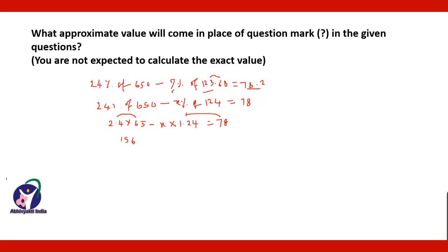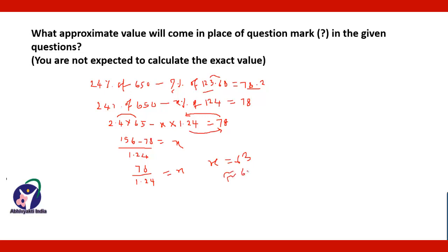If you shift 78 to this side it becomes minus 78. Then take 1.24x to the other side — it will be plus 1.24x — and if you take 1.24 to the denominator on this side, it gives 156 minus 78 divided by 1.24 equals x. So 78 divided by 1.24 equals x, and x is equal to 63. The approximate value of x is 63.